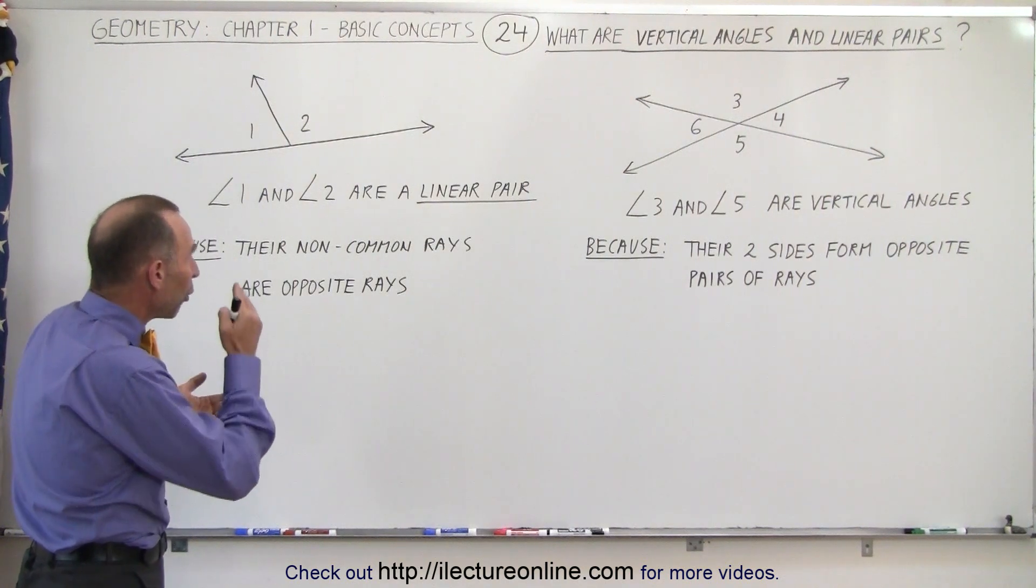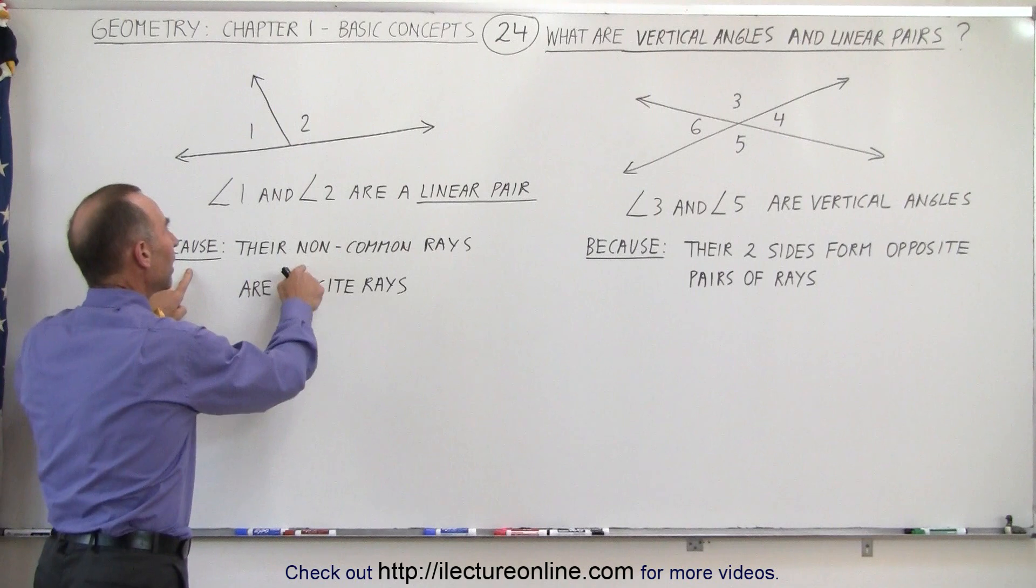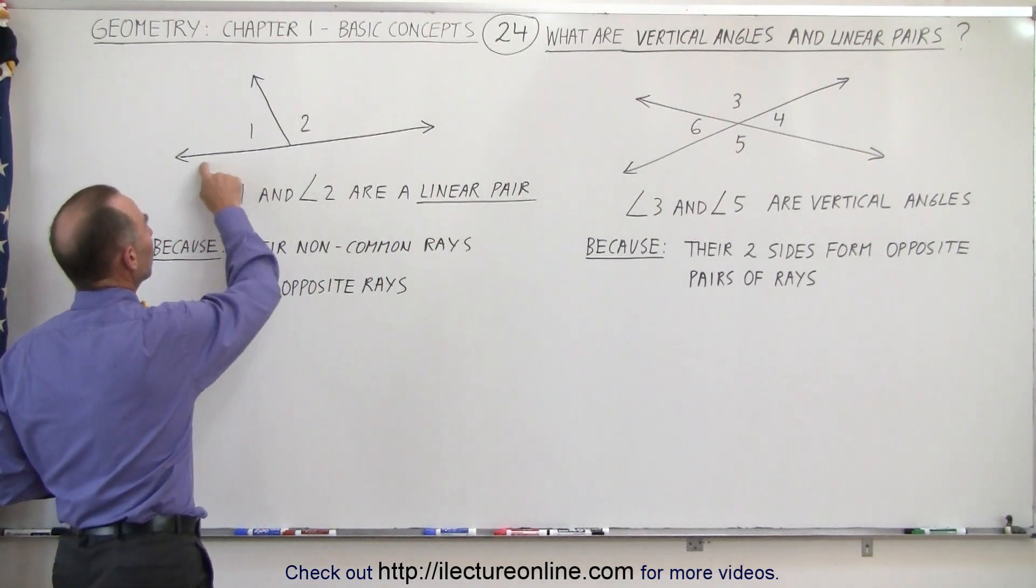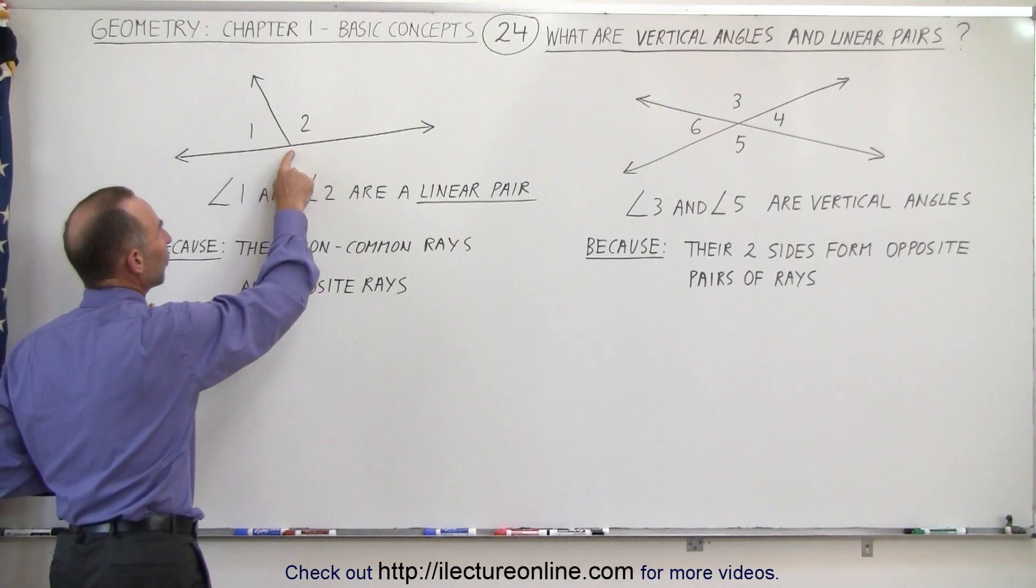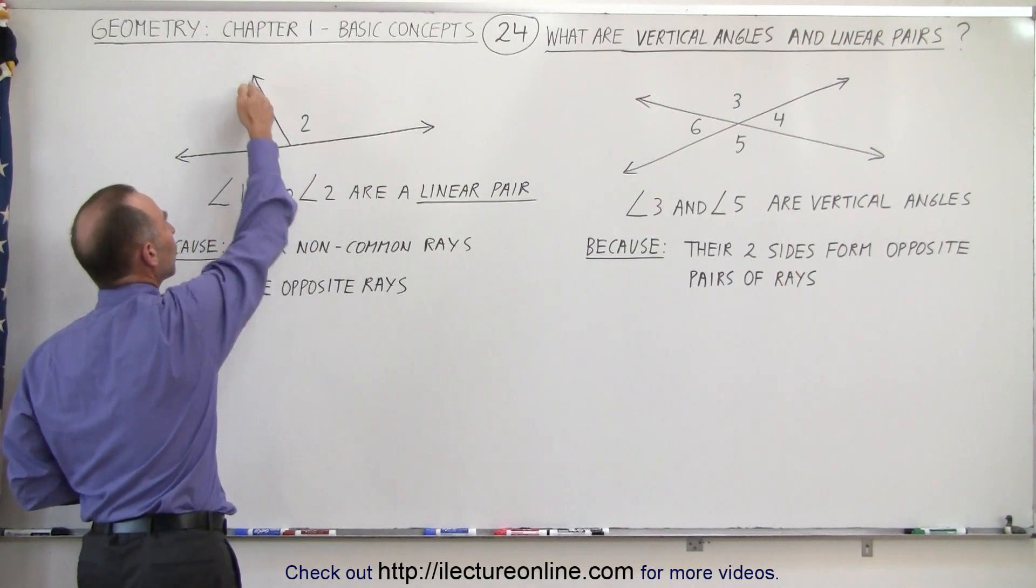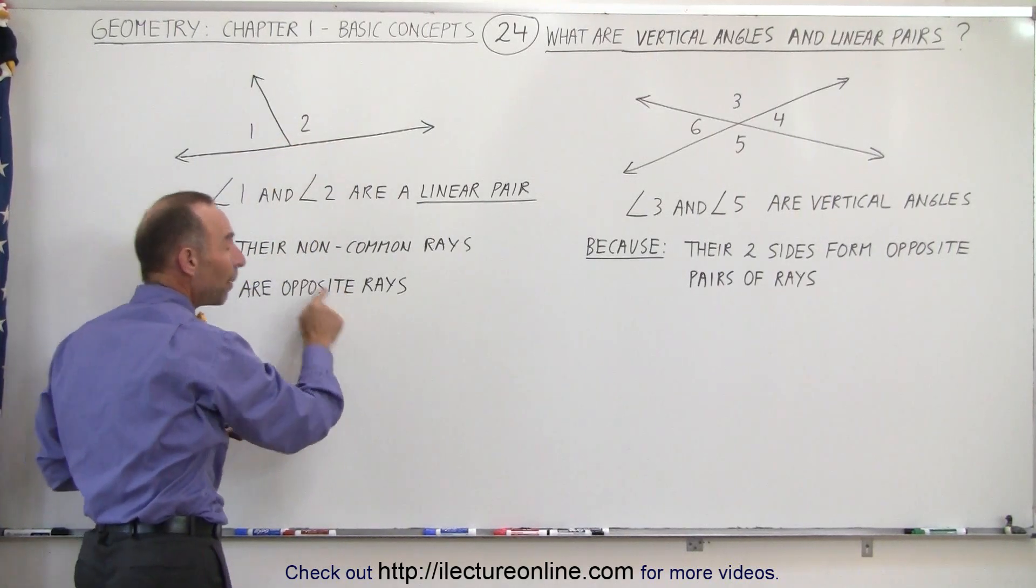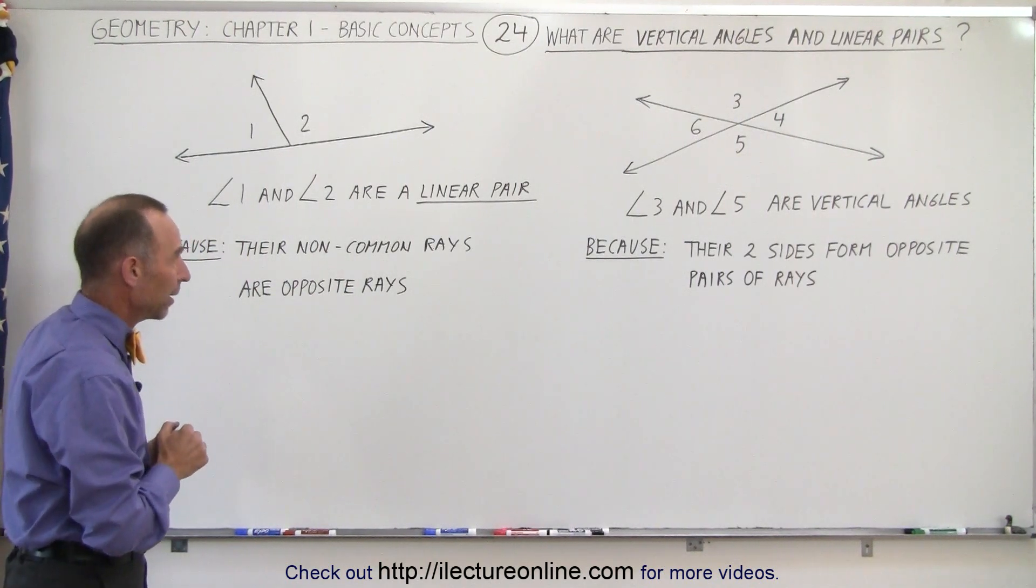Angle 1 and angle 2 are also called a linear pair because their non-common rays are opposite rays. So you can see that this ray right here from where the three rays meet, with the endpoint to the left and from the endpoint to the right, these are not common to the two angles. This is the only common ray. So the two rays that are not common are opposite rays, and that's the definition of two angles that are a linear pair.